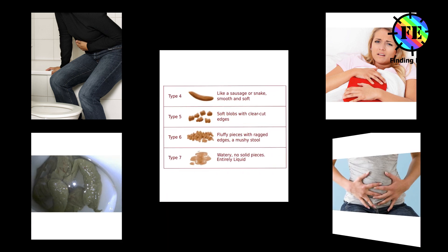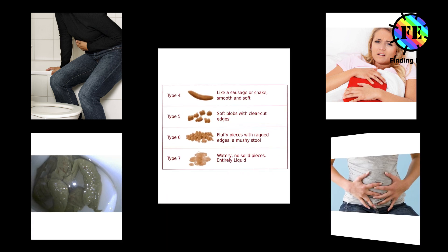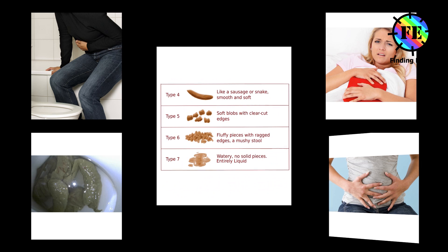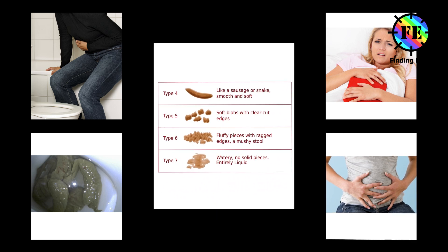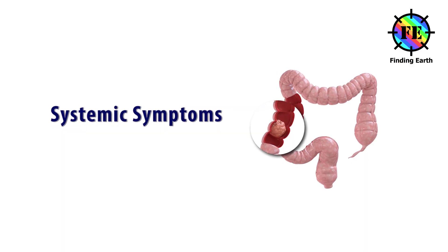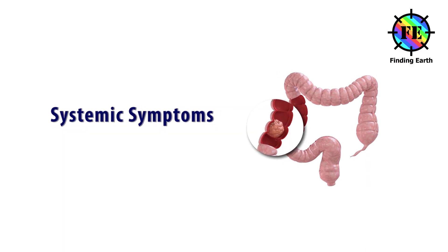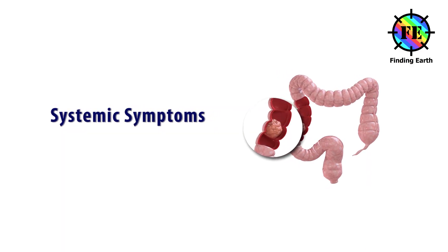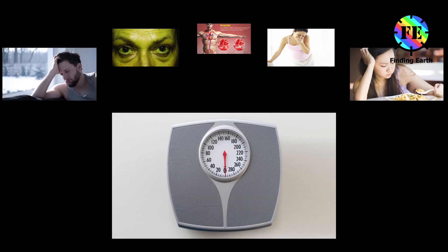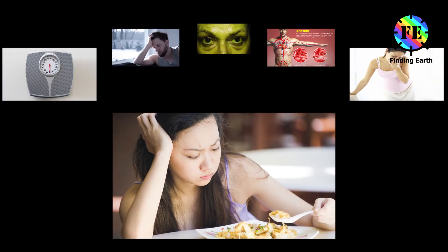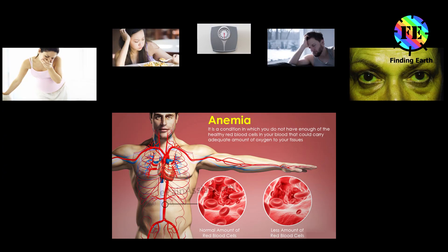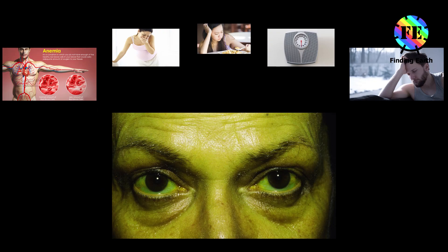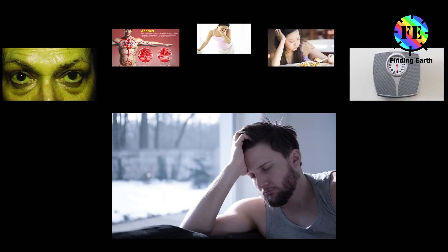Abdominal and midsection discomfort. Bloating. Frequent gas pains or cramps. Systemic colon cancer symptoms: Unintentional weight loss. Loss of appetite. Nausea or vomiting. Anemia. Jaundice. Weakness. Fatigue.